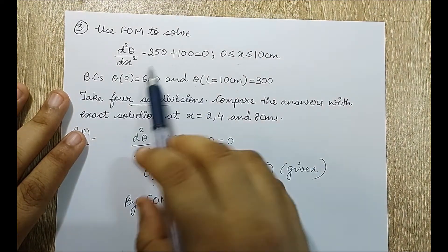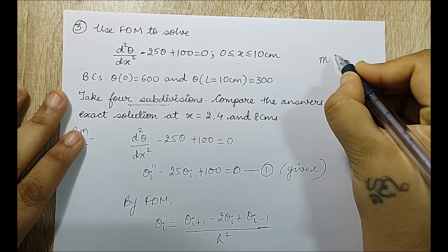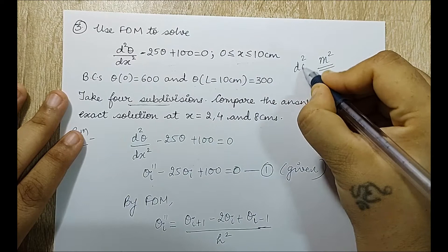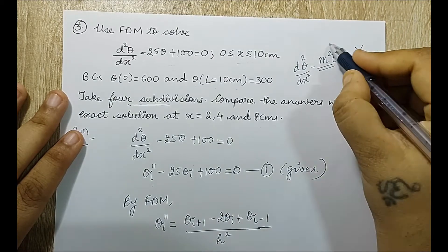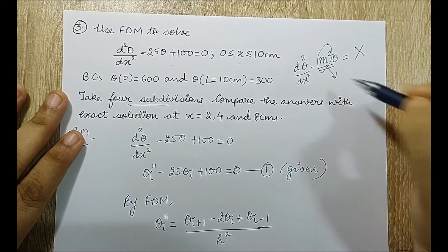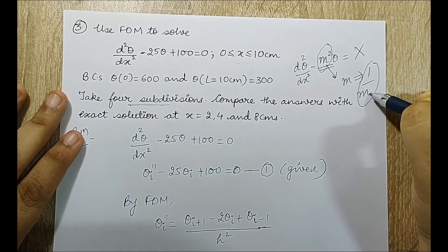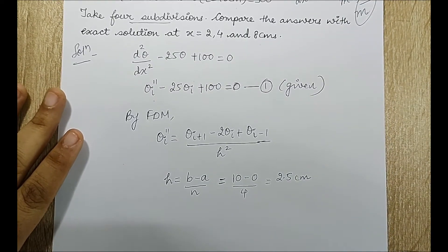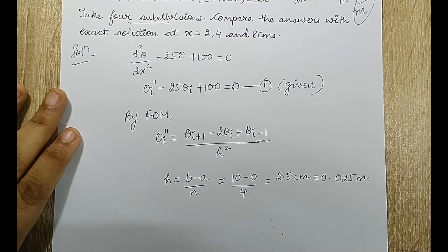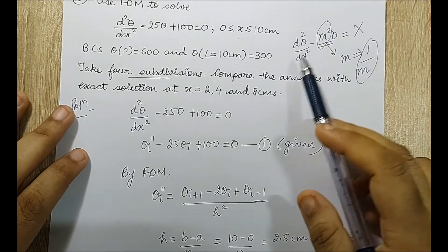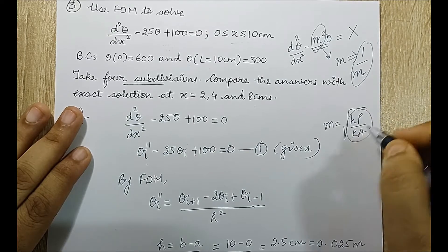An important observation: this equation is the governing differential equation of a fin. The number 25 represents the term m squared. In the fin equation, d squared theta by dx squared minus m squared theta equals some term, so m squared equals 25. The unit of m is one upon meter, so I will convert everything into meters. Therefore h becomes 0.025 meter. If you solve this question in centimeters you will get wrong answers, because in the fin equation m equals root of hp upon kA, all terms are in meters.